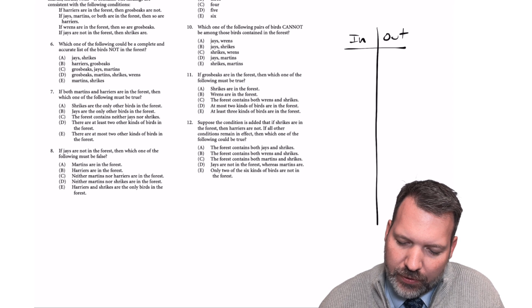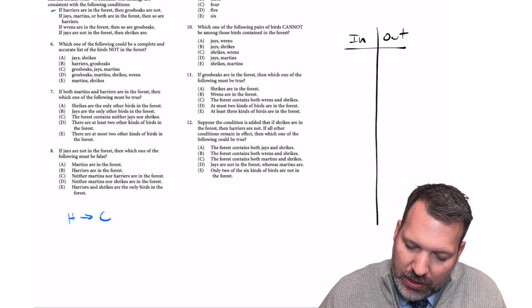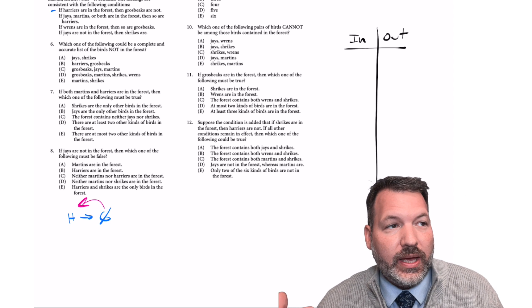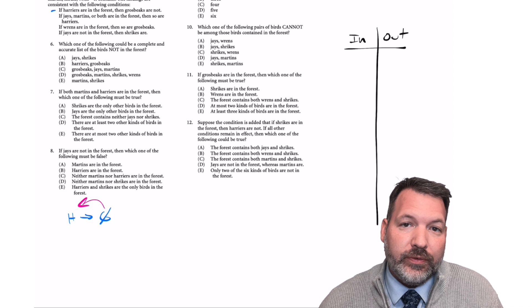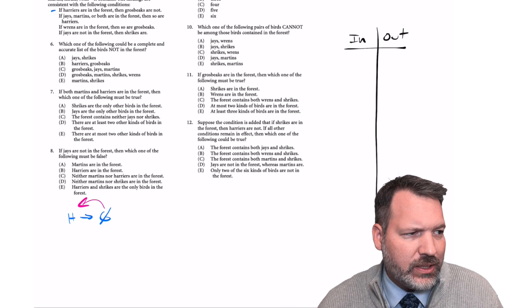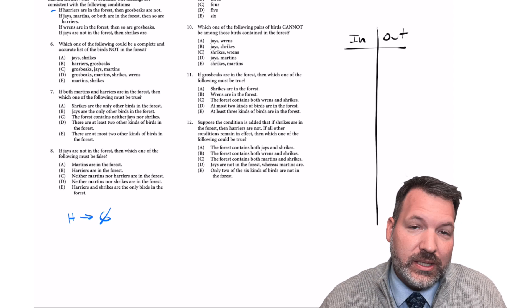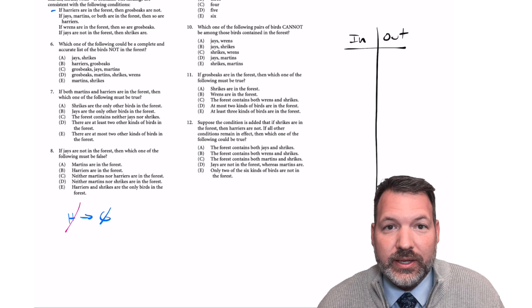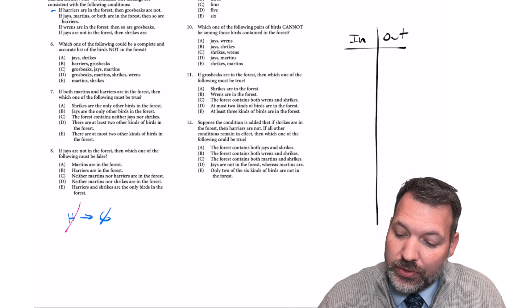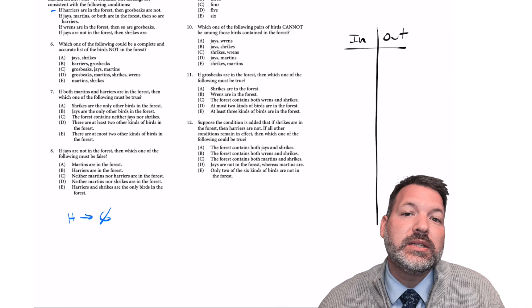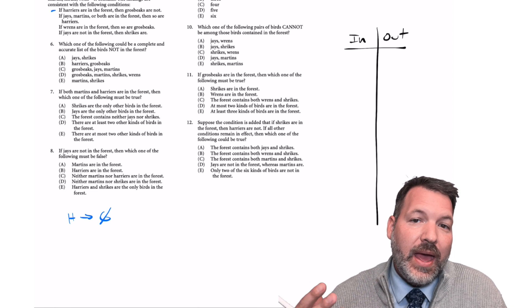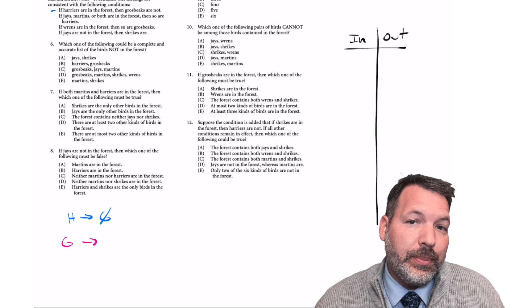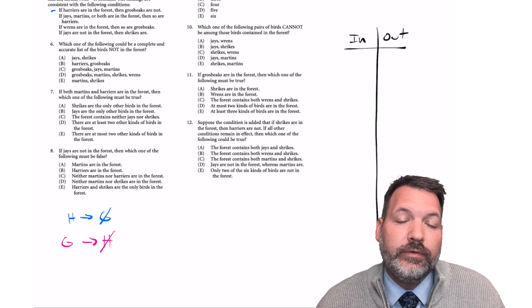Let's go ahead and symbolize these. If Harriers are in the forest, then Grosbeaks are not — so if H is in, G is out. We always want to come up with our contrapositives right away. If G is out, does that mean H is in? No — that's the converse, which is not necessarily true. The contrapositive, which is always true, requires us to both flip and negate: if G is in, then H is out.